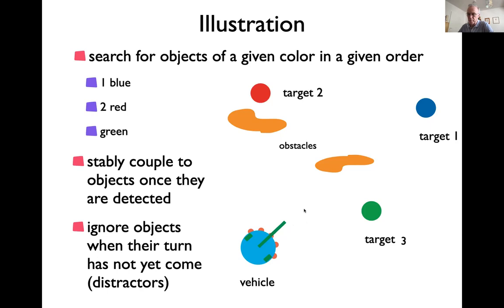It takes unpredictable amounts of time for the vehicle to find these targets — it could hypothetically not find one. It's supposed to stick to the order: try to find the blue one, and only once it's found the blue one, switch to the red one. If it happens to see a red one but is still on the first color, it's supposed to ignore that red one. That's an important challenge because that's where stability comes about — the stability of resisting distractors, the stability of a mental state of an intention.